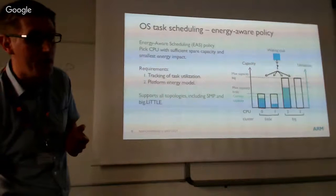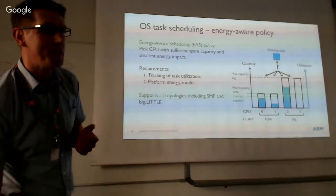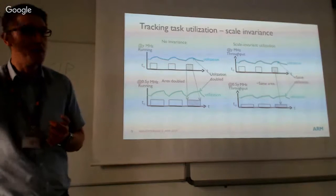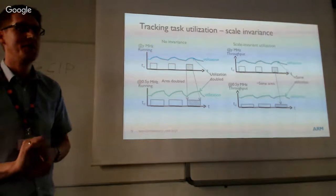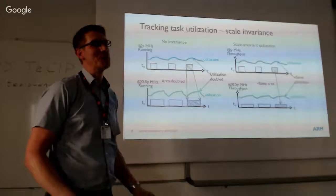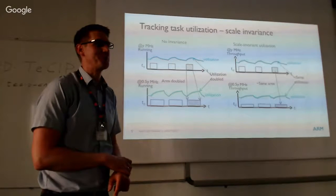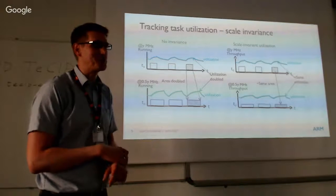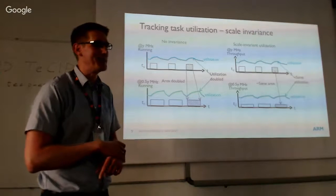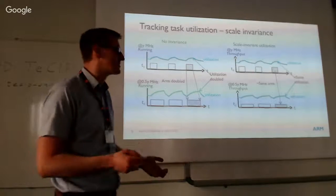What about the task model — how do we know the capacity requirement of the task being placed? That's where PELT comes in. Without any information, we basically guess: we use the past to try to predict the future. It's a flawed approach in many cases, but we can't do much better because we have no a priori information about the task.